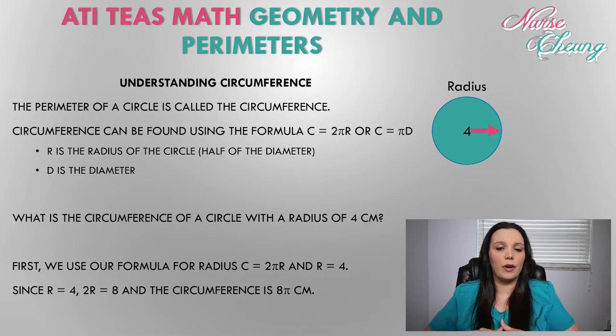Well since r is equal to 4, we're going to plug that into our equation. So that leaves us with c is equal to 2 pi 4. But again, we've got some like terms here, we've got two whole numbers, so we're going to multiply those together. 2 times 4 is equal to 8. So we know that the circumference of this particular equation is 8 pi centimeters.